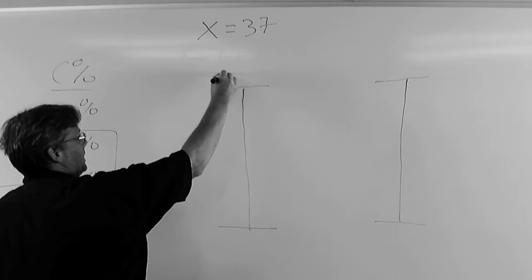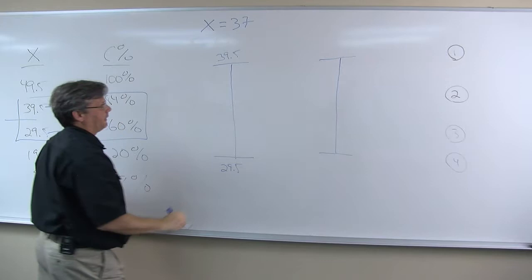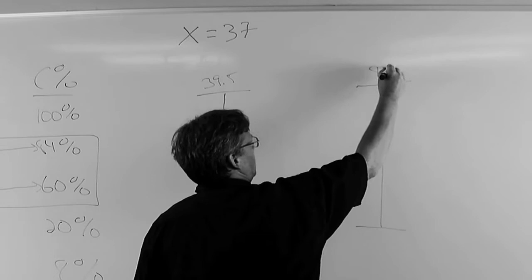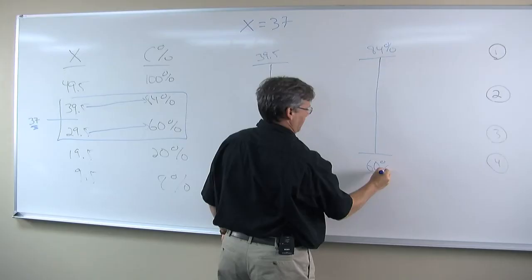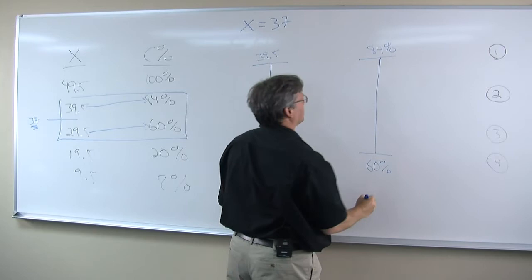For the X-score, the top is 39.5, the bottom is 29.5. For the cumulative percentage scale, the top is 84% and the bottom is 60%. Then after you get the top and bottom of both of your scales, I think it's a good idea to find the midway points on both scales.